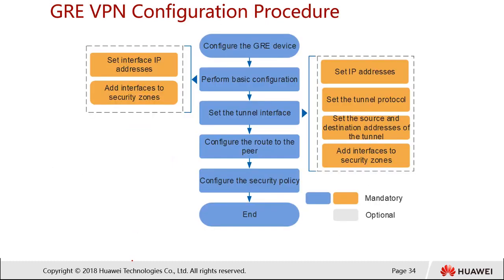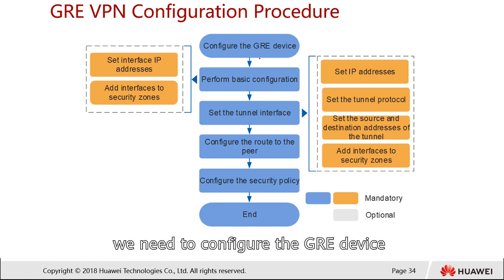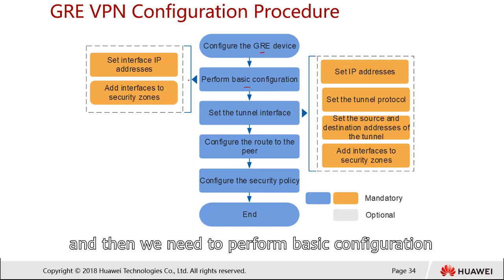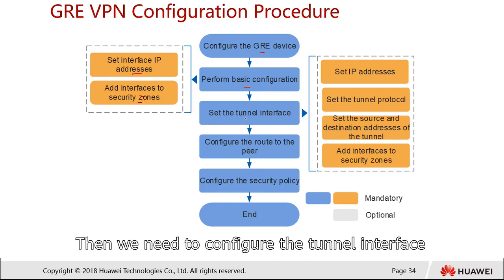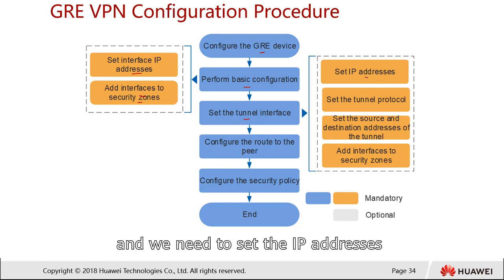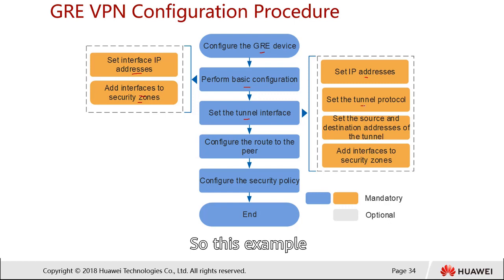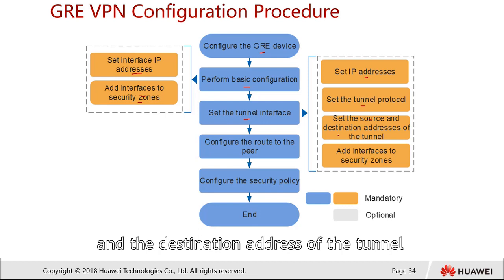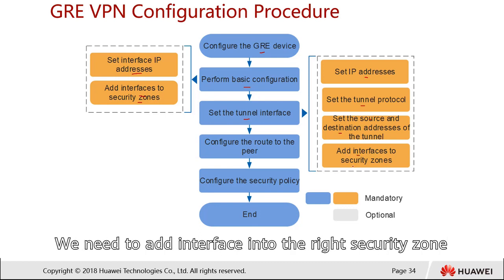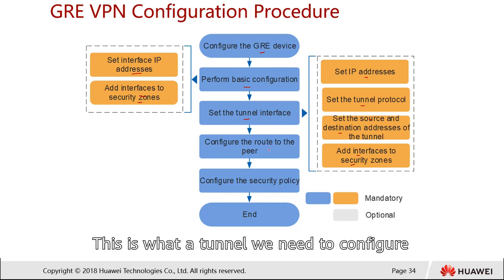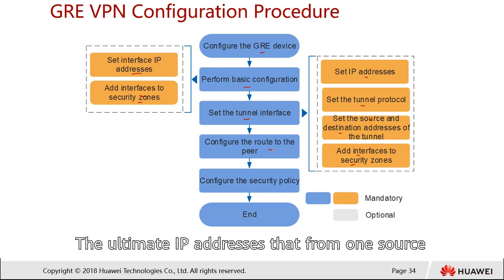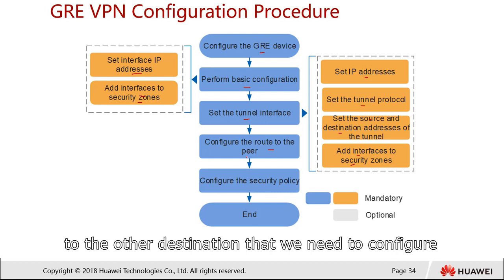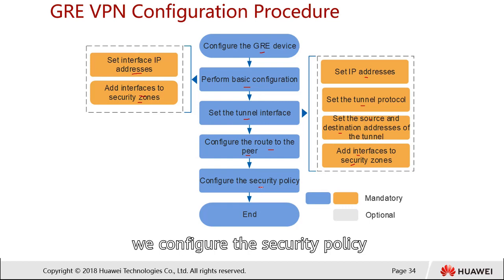The requirement is that the two subnets, Network 1 and Network 2, running IP protocol, can communicate with each other through a GRE tunnel established between Firewall A and Firewall B. The configuration procedure is: configure the GRE device with basic settings — set IP addresses on interfaces, add interfaces to the correct security zones — then configure the tunnel interface with its IP address (172.16.x.x), set the tunnel protocol to GRE, set source and destination addresses for the tunnel, add the tunnel interface to the correct security zone, configure static routes, and finally configure the security policy.